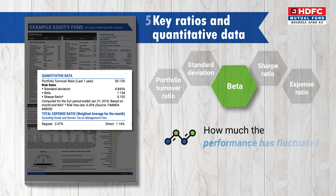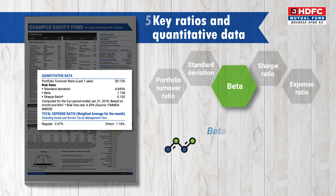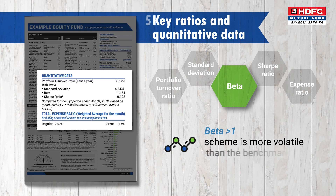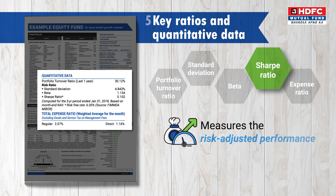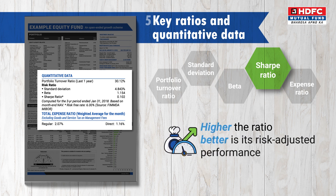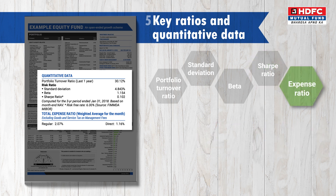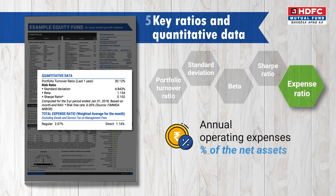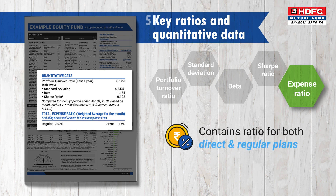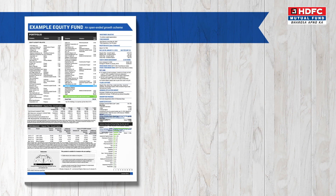Beta tells how much a scheme's performance has fluctuated compared to its benchmark index. Beta greater than 1 implies that the scheme is more volatile than the benchmark index. Sharpe ratio measures the risk-adjusted performance of a scheme — the higher a scheme's Sharpe ratio, the better is its risk-adjusted performance compared to a scheme with a lower Sharpe ratio. Expense ratio gives the annual operating expenses of a scheme as a percentage of the scheme's net assets. The fact sheet contains the expense ratio for both direct and regular plans.